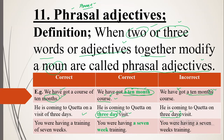The third example: 'You were having a training of seven weeks' — correct. As a phrasal adjective: 'You were having a seven week training.' Seven, three, and ten are all numeral adjectives — specifically definite numeral cardinal adjectives — used in phrasal adjectives to mention time, date, etc. So 'a seven week training' is correct, but 'a seven weeks training' is wrong. Do not put 's' with the noun in a phrasal adjective.